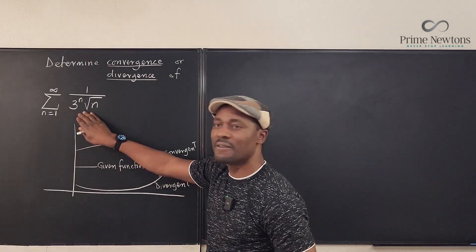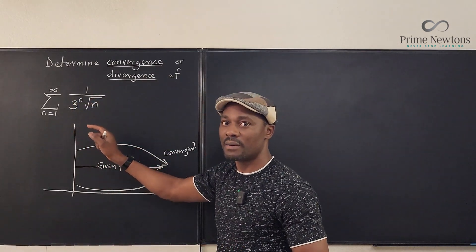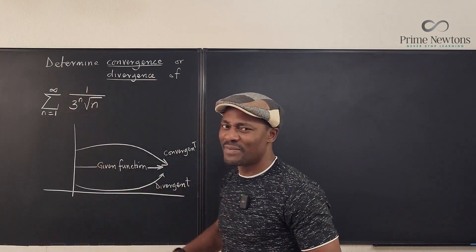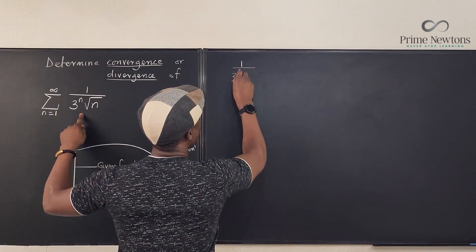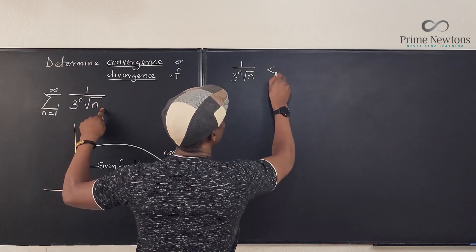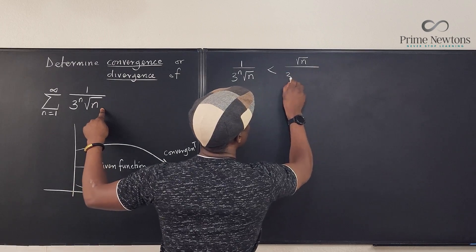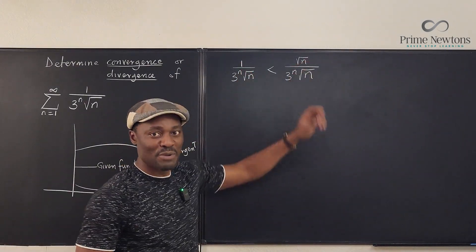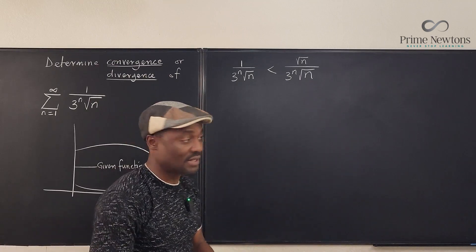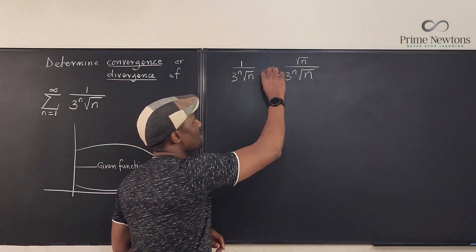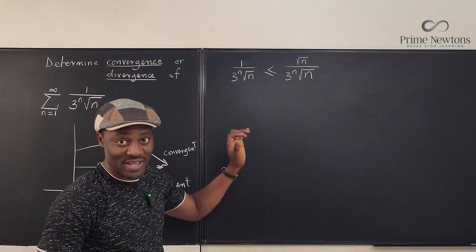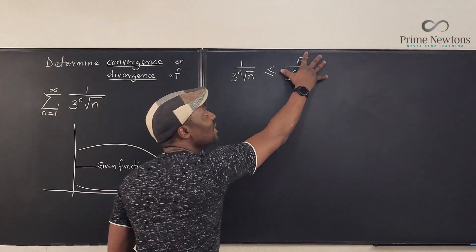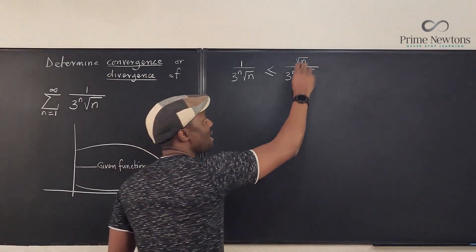Go back and ask: how can I make this function bigger? You either reduce the denominator or increase the numerator. Look: 1 over 3 to the n times square root of n is definitely less than or equal to square root of n over 3 to the n times square root of n. I multiplied the numerator by square root of n, because n values are bigger than or equal to 1 after you start the process. So we have found that the function we have is always less than or equal to this new function we created.